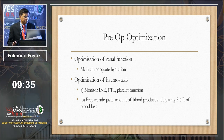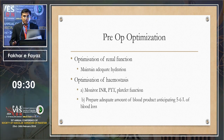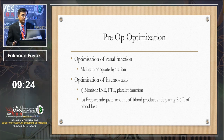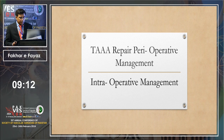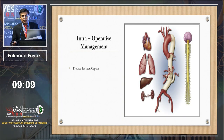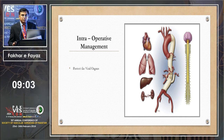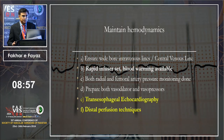Intraoperatively, the anesthetist performs multitasking revolving around protection of major organs. Maintain hemodynamics, ensure wide-bore IV lines, central venous line, rapid infuser sets, and the Belmont device is essential. Both radial and femoral artery pressure monitoring is performed — typically three arterial lines: both radials and one femoral — especially for aortic surgery. Prepare both vasodilators and vasopressors: norepinephrine, phenylephrine, and GTN.